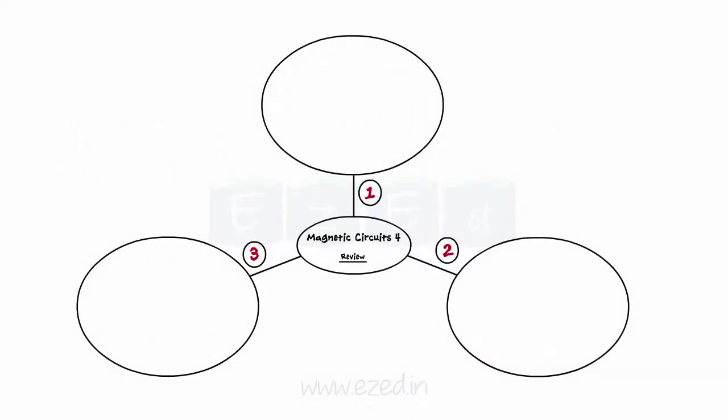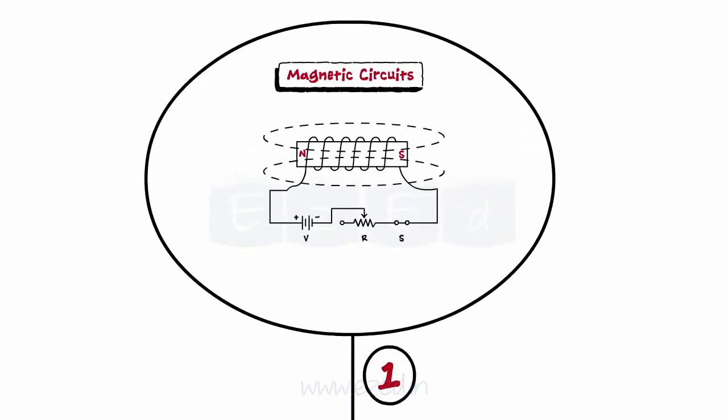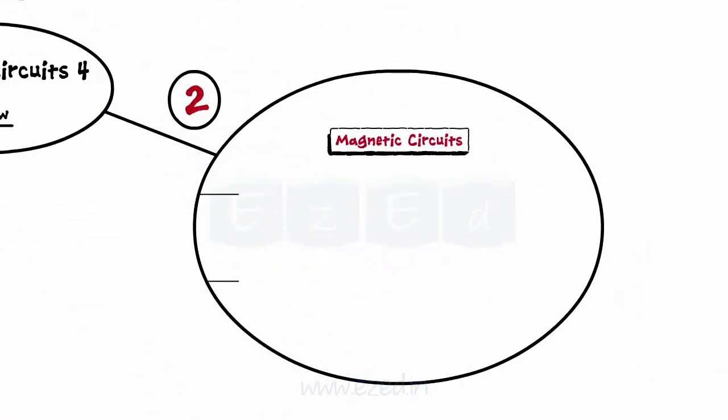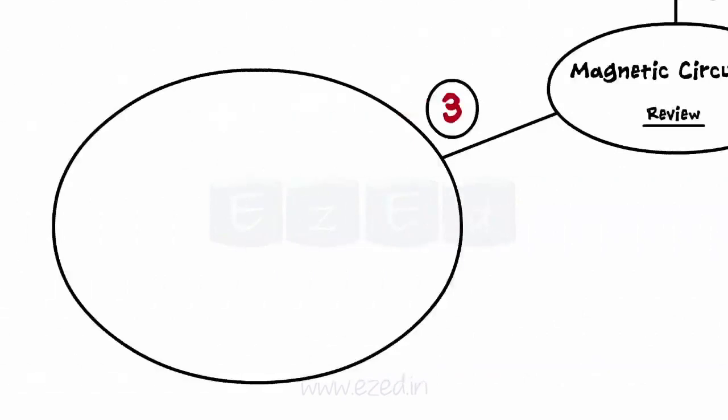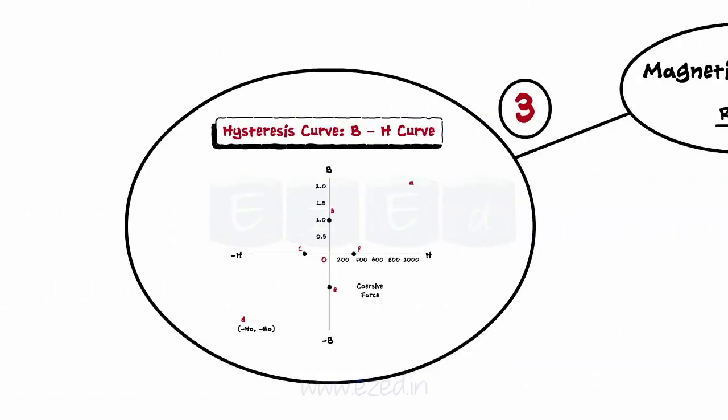Let's have a quick review. For magnetic circuits, energy is only required to establish the magnetic field and not to maintain it. We get the expression for the energy as E equals half into L into I square, and the unit is joules. BH curve determines the relationship between magnetic flux density B and magnetic field strength H as the current in the coil changes in positive or negative direction.